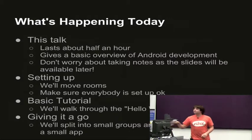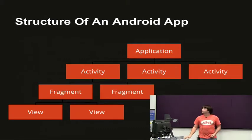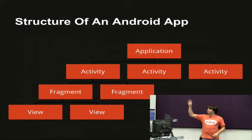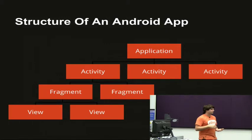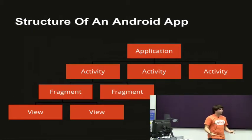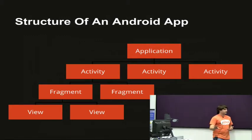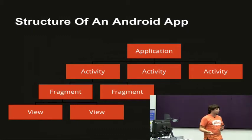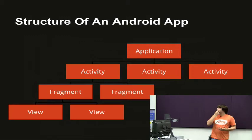I'll quickly go through the basic structure of an Android app. At the very top you have the application. Each component has its own lifecycle — you've got a Java class, and it'll have methods called at specific times: onCreate, onPause, onResume, and onDestroy. onCreate is when it first gets created; in the application's case, when you first launch it, you'll get that first creation. That's a perfect opportunity to start kicking off stuff you need to do in the background for your app.